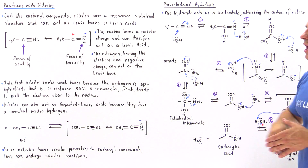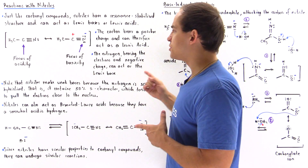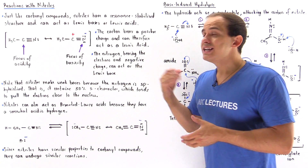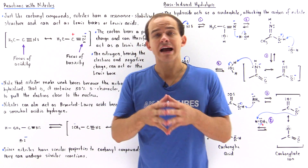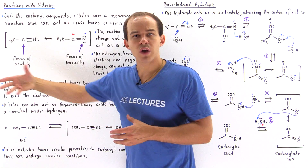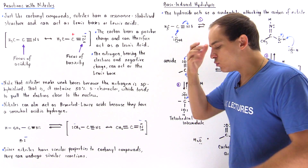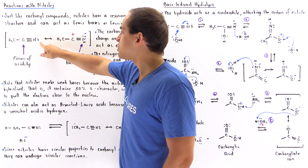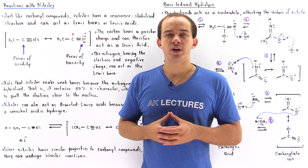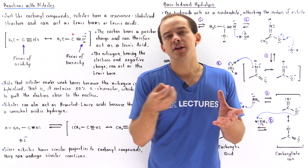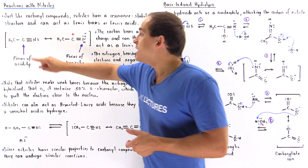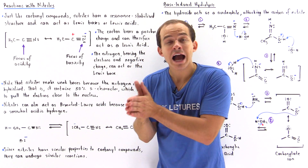The nitrogen bearing the electrons and a negative charge can act as the Lewis base. The question is, how good of a Lewis base are nitrile molecules? To answer this, we have to examine how likely it is that the two electrons on the nitrogen will interact with some other atom — basically, we have to examine the type of orbital in which these electrons are found. Remember, the more s-character in a given orbital, the closer the electrons are to the nucleus and the more difficult it is to pull those electrons away. This nitrogen is SP hybridized.